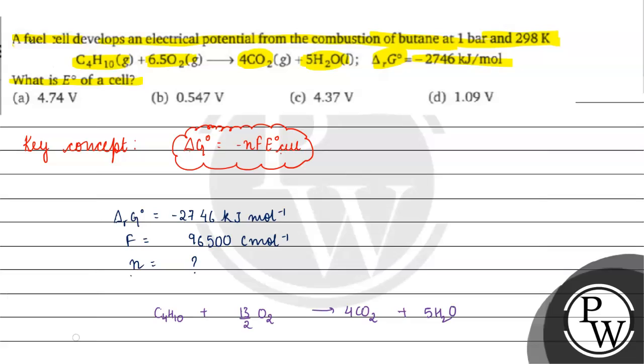Looking at oxygen molecules, we have 13 on the reactant side. The change in oxidation state of oxygen: here the oxidation state is zero, and here the oxidation state becomes minus two. For oxygen atoms, it's minus 2 per atom, so 8 times minus 2 equals minus 16.